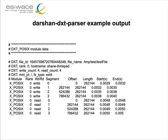In this slide we see an output of the Darsan DXT Parser. It has several modules — in this example POSIX. The fields include: the rank, a read or write indicator specifying if the command was a read or write, the segment, the offset at which the command was executed, the length (number of bytes the command carried), and then the start and end time of each call.